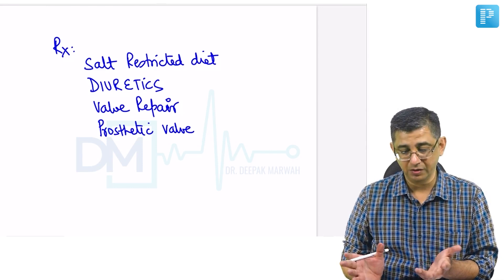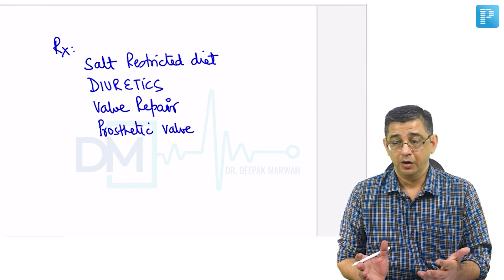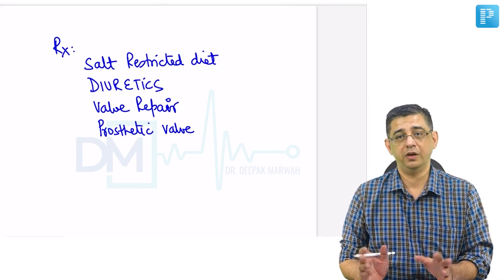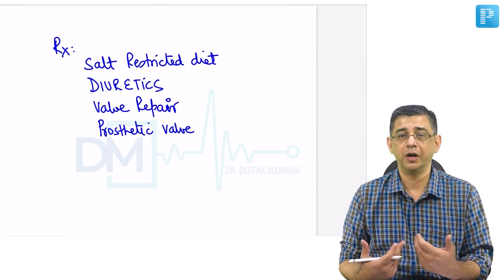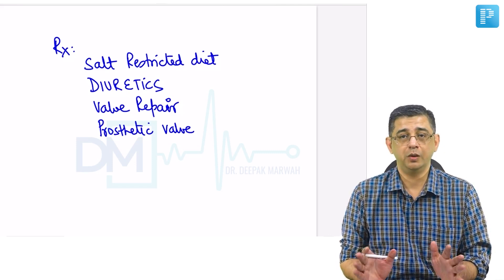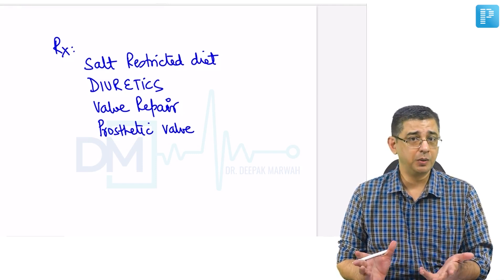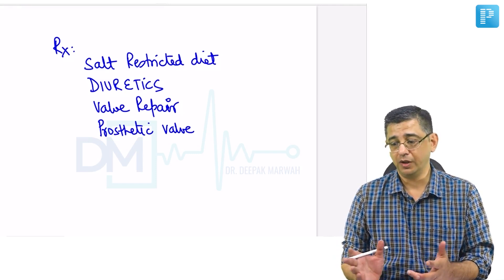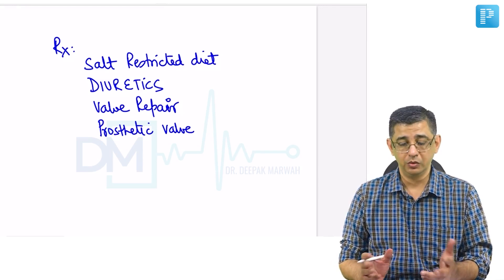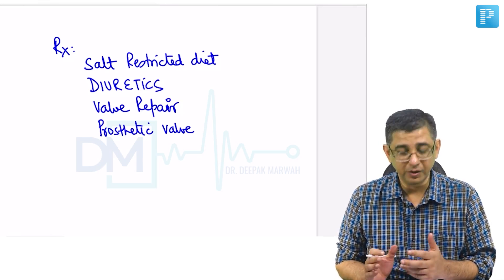With a metallic prosthetic valve, lifelong anticoagulation must be taken into consideration. If a patient is unwilling to take prophylactic medicines after surgery, in those circumstances you have to put in a bioprosthetic valve — though they may have to pay a little more for that option.